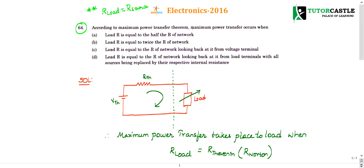Option A says maximum power transfer occurs when load R is equal to half of R of the network — that is incorrect. Option B says load R is equal to twice — that is also incorrect; it should be exactly equal. Options C and D both state load R equals R of the network, so we need to choose between C and D.